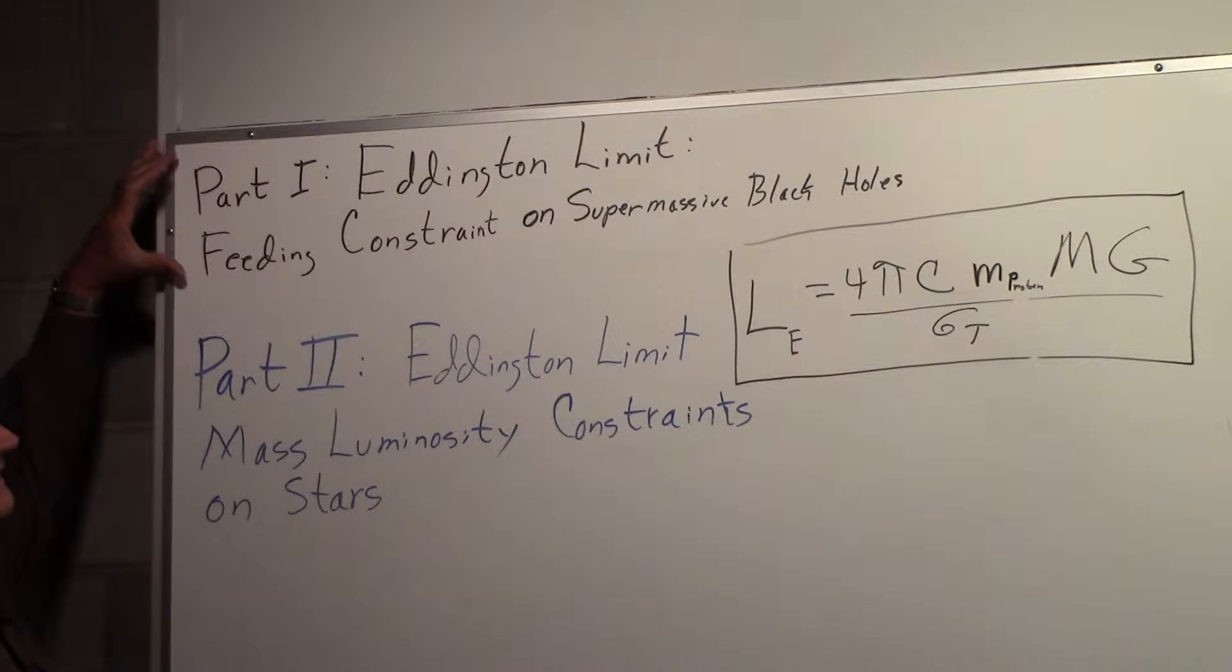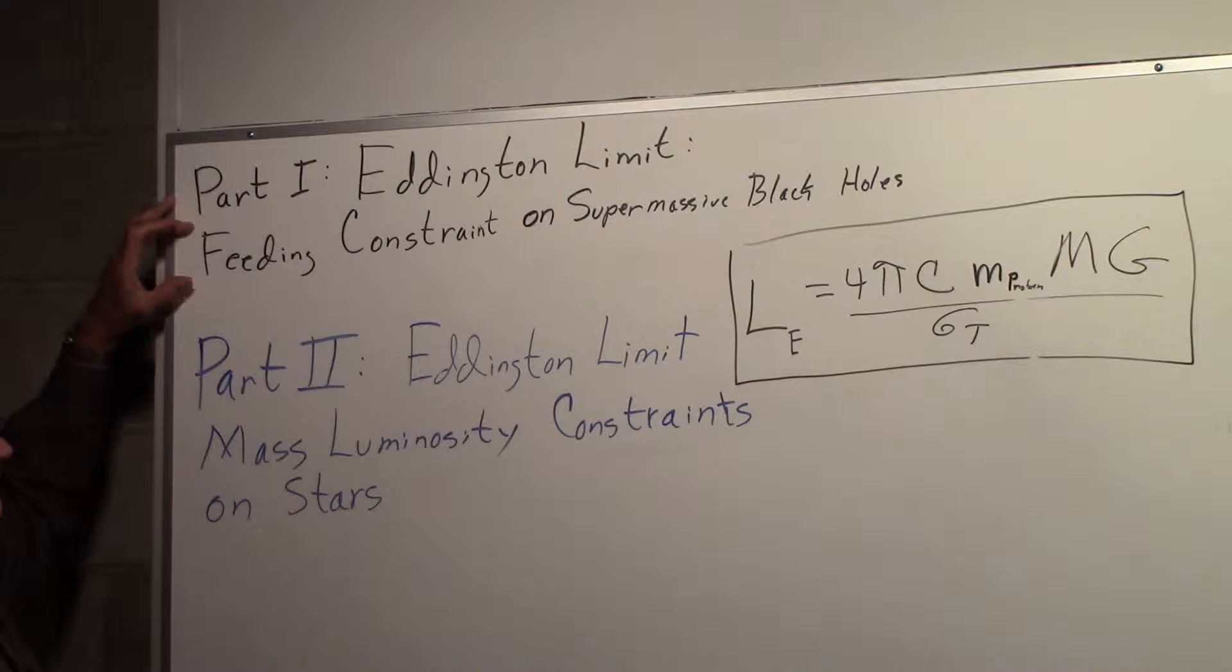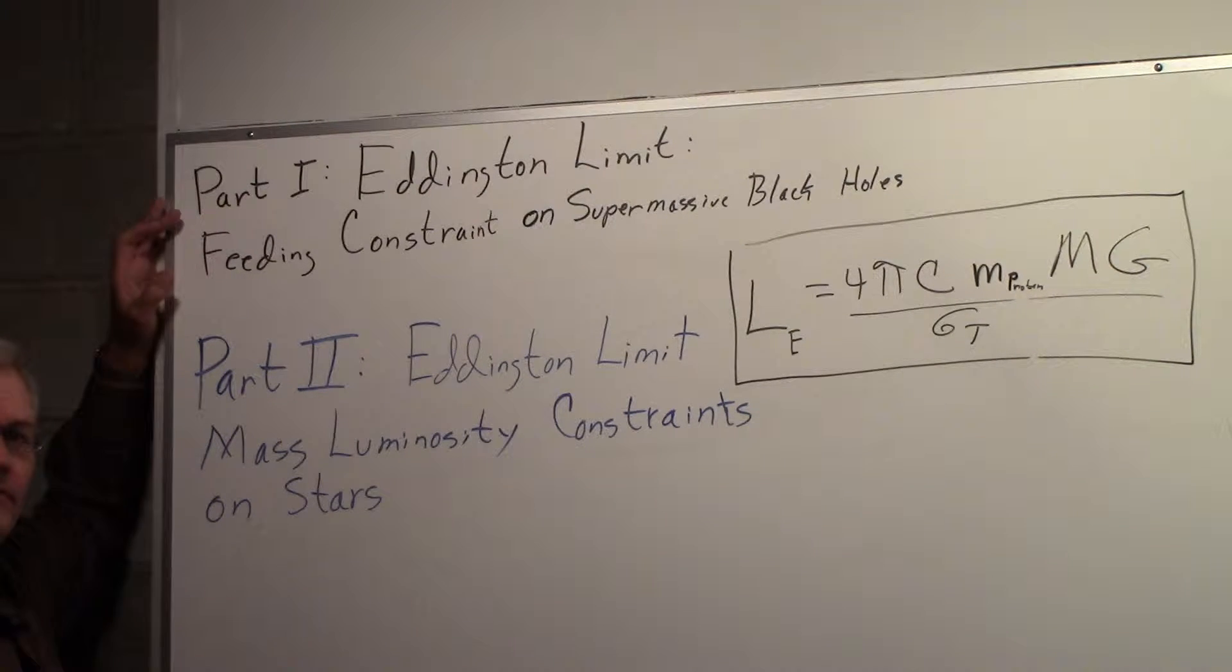Earlier in part one we talked about the Eddington limit in terms of basically a feeding constraint on supermassive black holes.